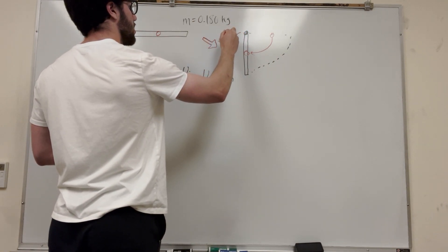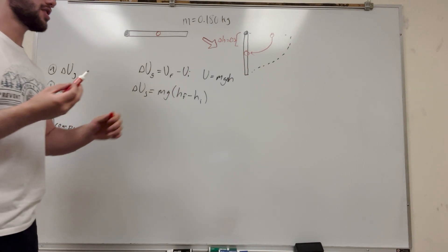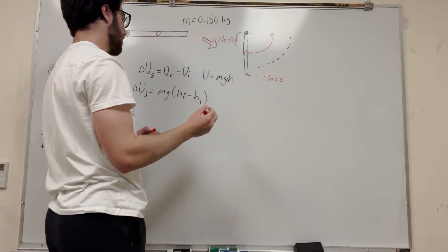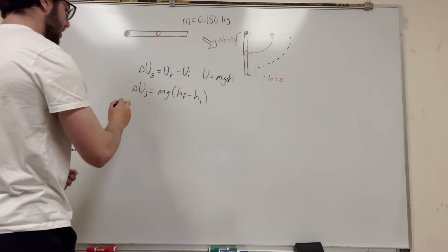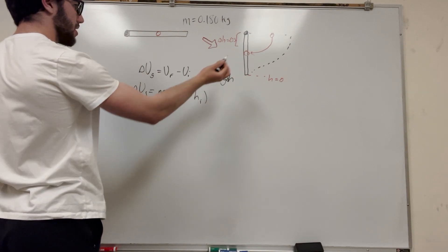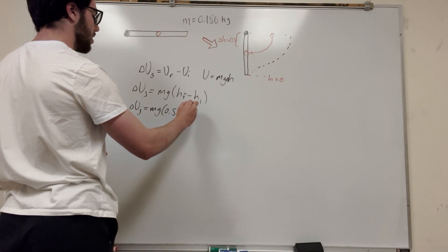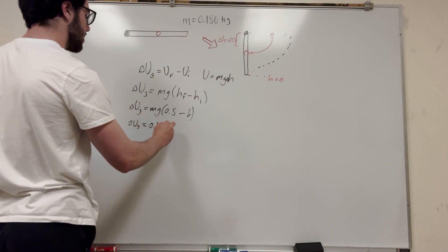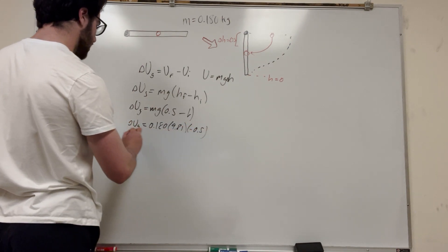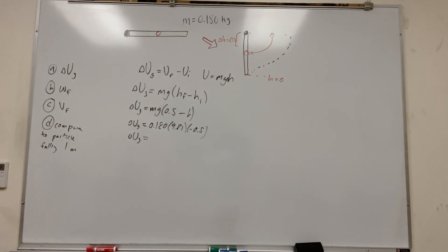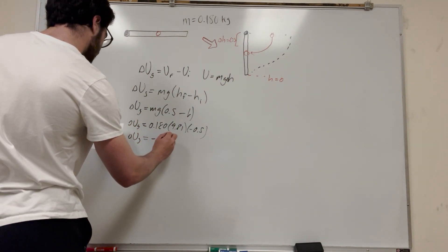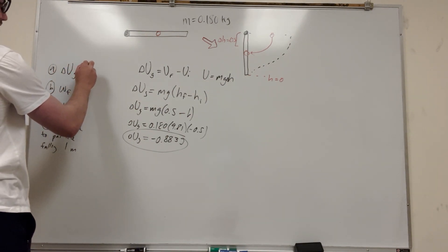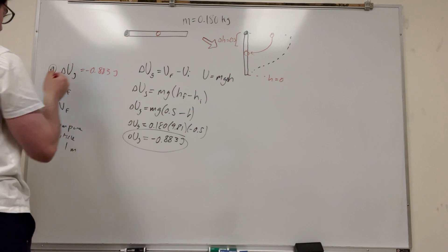So that change in height there is equal to 0.5 meters. It starts at, if we're taking this to be the baseline, this is height is equal to zero. This is one, and then this is 0.5. So it goes down to 0.5. So delta U is equal to mass times gravity. So the mass is 0.18 times 9.81 times negative 0.5. Change in gravitational potential energy. Calculate this. Negative 0.883 joules. So there's part one.